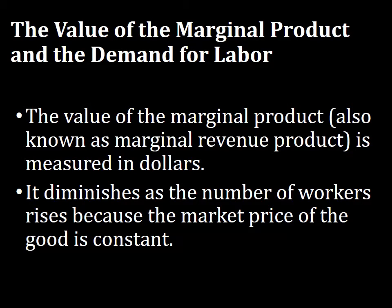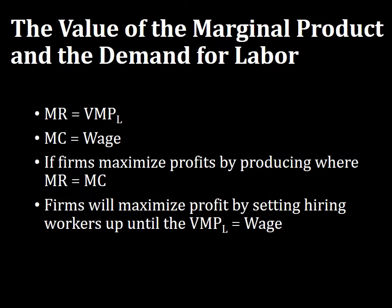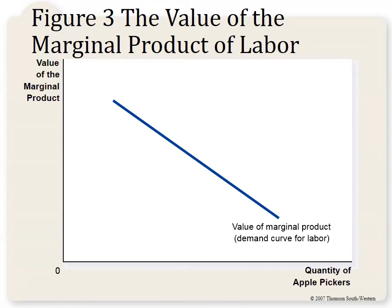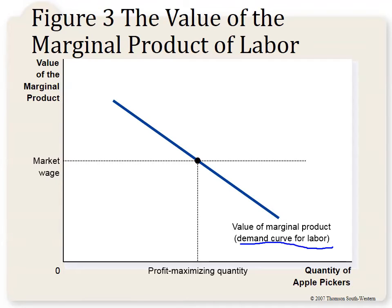The value of the marginal product is measured in dollars and declines due to the law of diminishing returns. VMPL is marginal revenue, wage is marginal cost, and the firm maximizes profit where MR equals MC — or equivalently, where VMPL equals wage. When graphed, the VMPL slopes downward and becomes the firm's demand for labor; the quantity where VMPL equals the market wage is how many workers the firm employs.